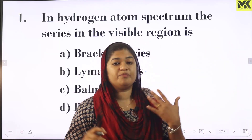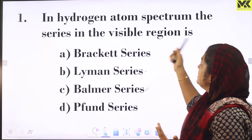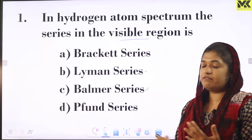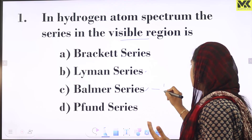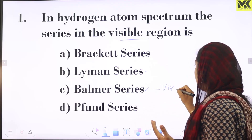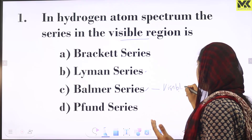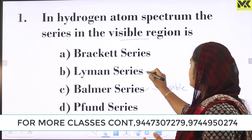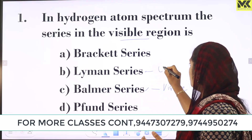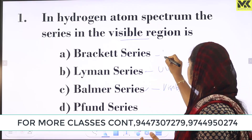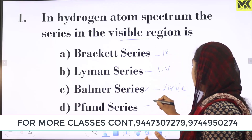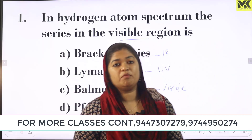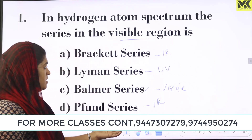The Balmer series is in the visible spectrum. The Lyman series is in the UV region, and the other three — Paschen, Brackett, and Pfund — are in the IR region.